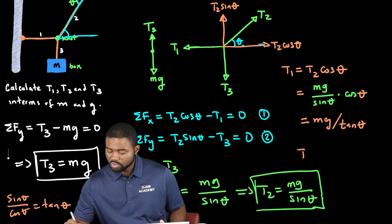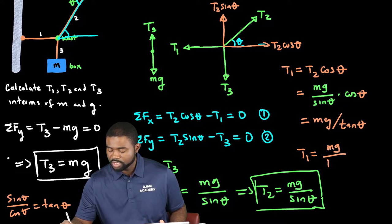Hence, T1 will be equal to mg divided by tan theta.